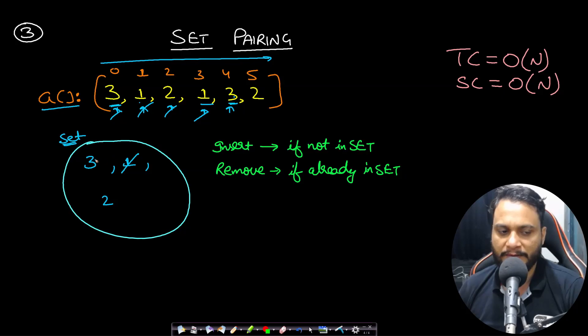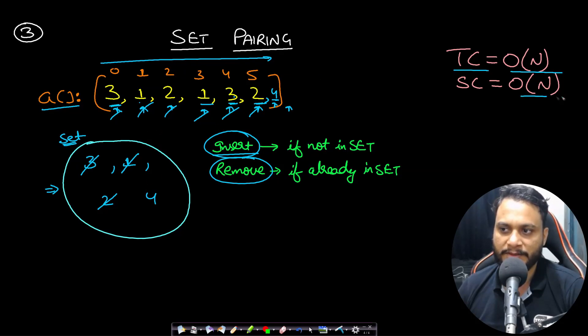One is present in the set so I will remove it from the set and move forward. Three is present in the set so remove it and move forward. Same goes for two. At the end, if you follow this approach of inserting when you see an item for the first time and removing when you see an item for the second time, if the set is empty then you can say that the pairing is possible. Otherwise pairing will not be possible. The time complexity is order of n, space complexity order of n, and this is a single pass approach.